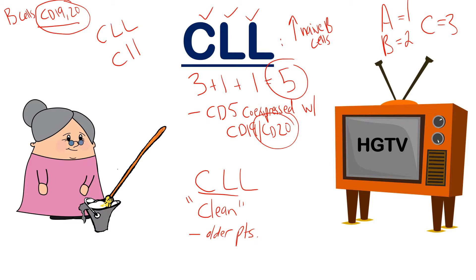You see this elderly patient with a cleaning bucket — that helps you remember CL for clean. C stands for 3, like A-B-C, so 3+1+1 for the two lowercase l's equals 5, giving you CD5. Remember, CD5 is normally a marker for T cells, but the fact that it's on these B cells tells you they're abnormal. This increased proliferation of abnormal naive B cells presenting CD5, co-expressed with CD19 and CD20, points toward CLL.